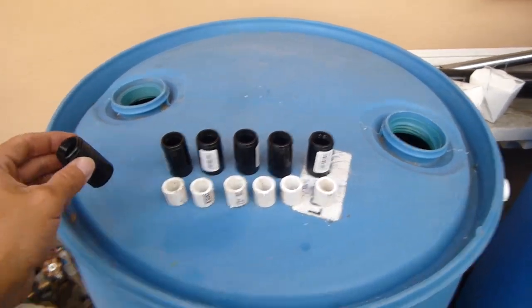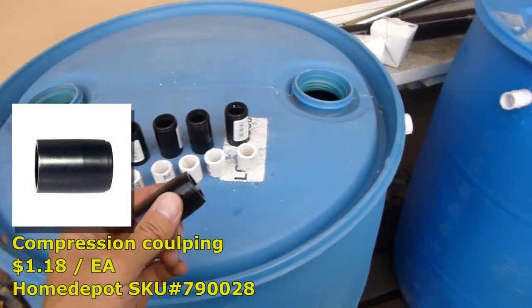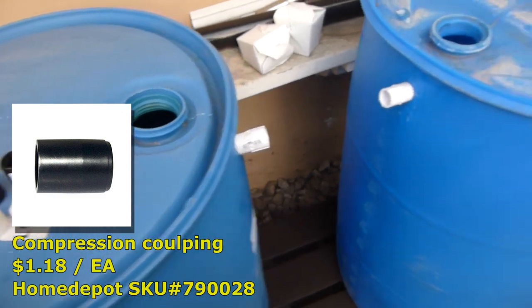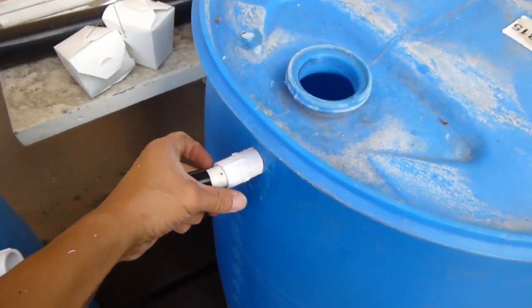Next I will use the compression connector and add them to the end of my inlet and outlet like this. Of course I'm gonna use PVC glue to make it permanent.